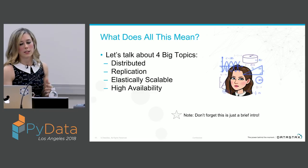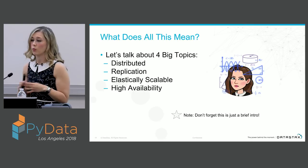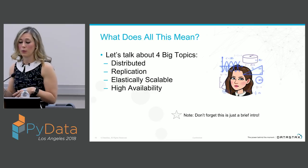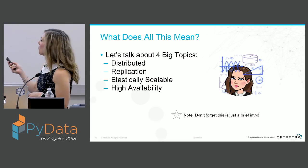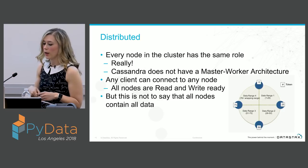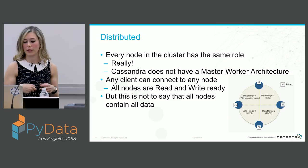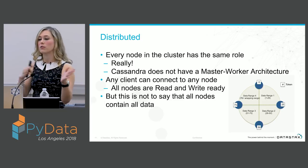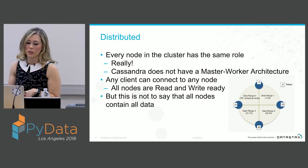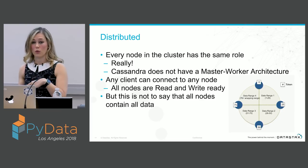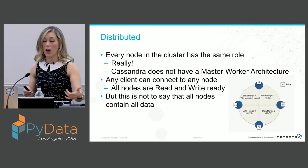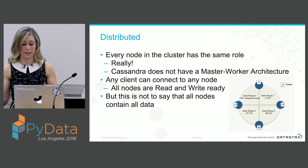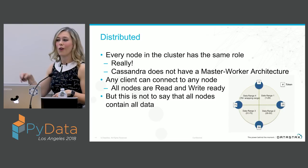Let's talk about the four big topics of what a distributed database like Cassandra is: distributed, replication, elastically scalable, and high availability. It has to be distributed to be able to handle big data. Every node in the cluster has the same role — there's no master-worker architecture in Cassandra. Any client can connect to any node for both reads and writes. There are not separate nodes for reads or writes, no master node, no client node — all nodes are exactly the same.